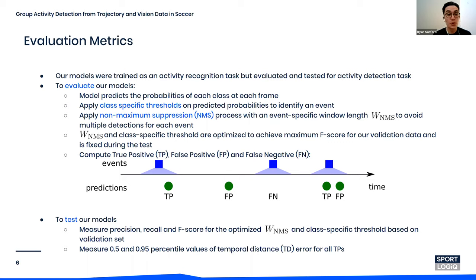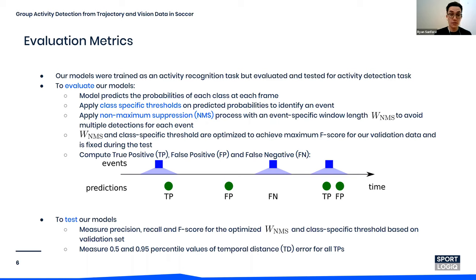With this approach, we are able to calculate precision, recall, and F-score. We are also interested in measuring the temporal distance of our predictions — that is, how far the predicted events were from the actual events. We label this error as the temporal distance.